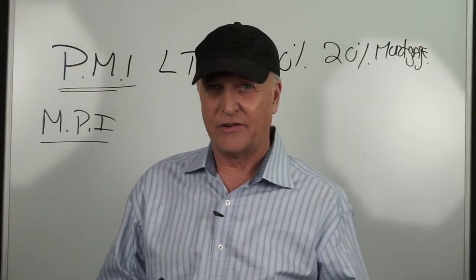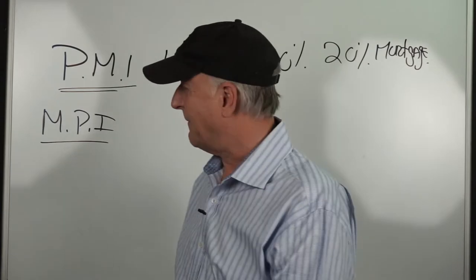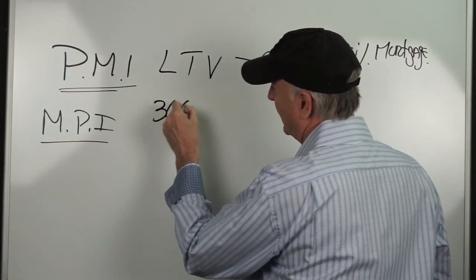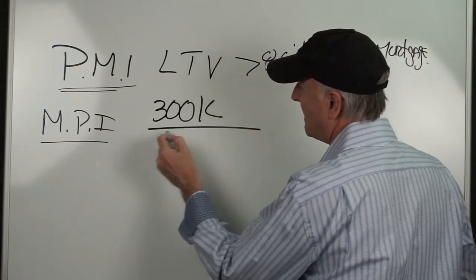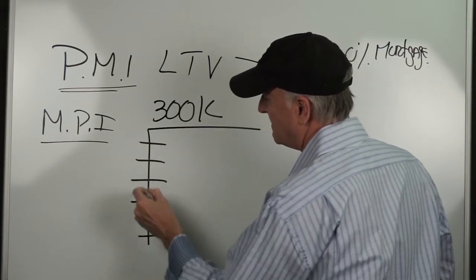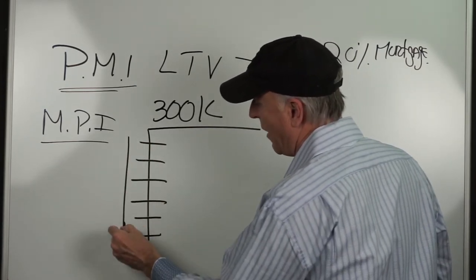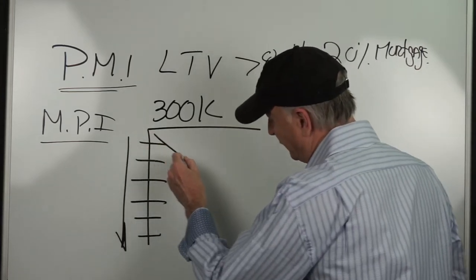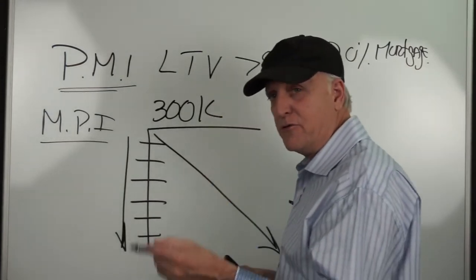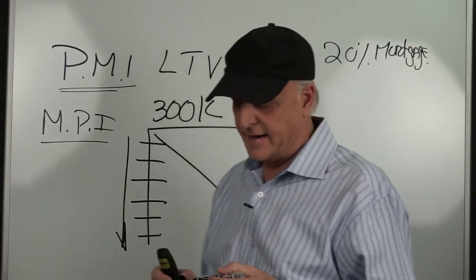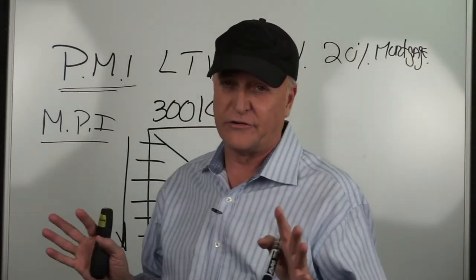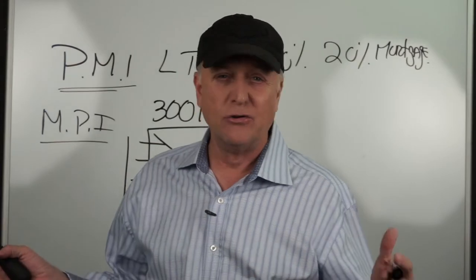Let's say your mortgage is $300,000. Over time your mortgage is going down — your principal is going down — but so is the insurance coverage. The idea is that every month you make your payment, your mortgage is less, so you need less coverage. It's basically decreasing term insurance, which I do not recommend in any case.